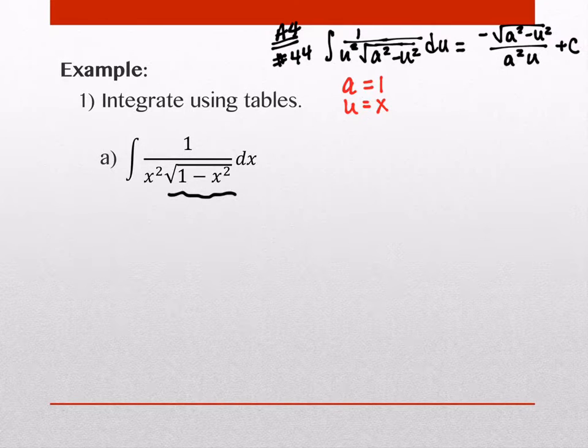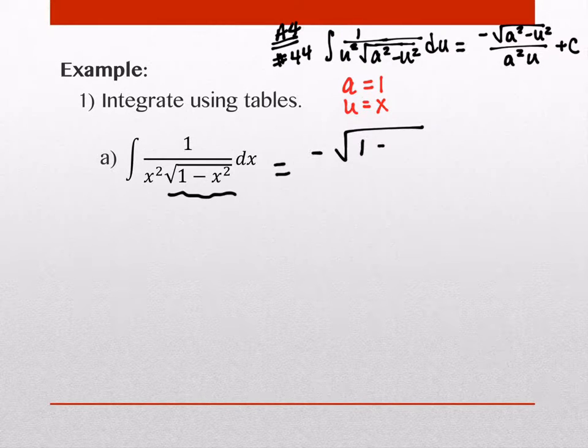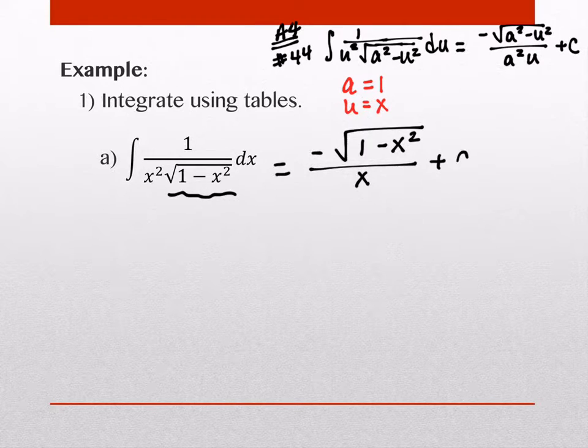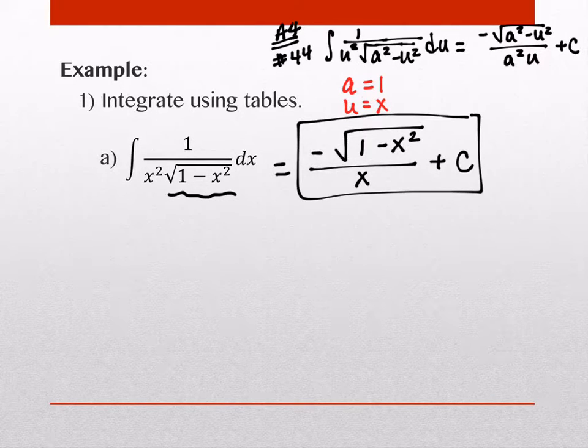You're identifying the a's and the u's. We may actually have, and we will here in a minute, actually have a legit u substitution to do. But this one's not because a and x or u and x are the same thing. So, our answer then is going to be this equals negative the same square root we have, which is 1 minus x squared, over a squared, well, our a is 1, it's not very exciting, u, and our u is x, and then we have a plus c. It's easy, right?